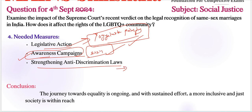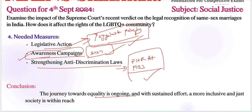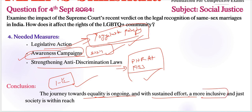For example, we can reference the Protection of Human Rights Act 1993. For the conclusion, we can include one to one-and-a-half futuristic sentences: 'The journey towards equality is ongoing and with sustained effort, a more inclusive and just society is within reach if we follow the above measures.' We need to connect our needed measures with the conclusion part.